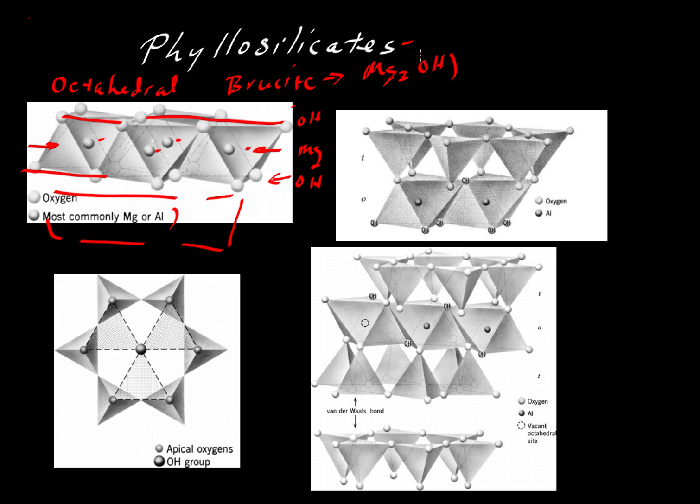Brucite has the formula Mg3(OH)6. We usually write it in one-third of that amount, but we're going to use the six oxygen bases, as you'll see, for writing other formulas and making comparisons in a moment.